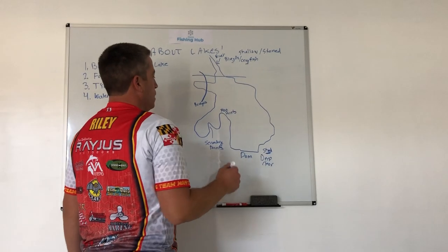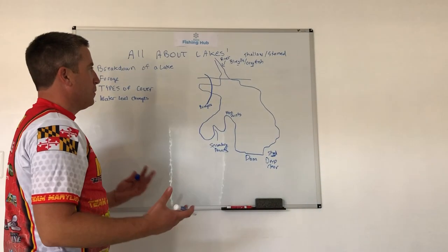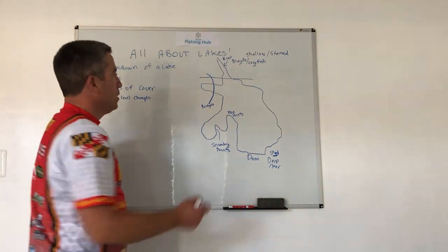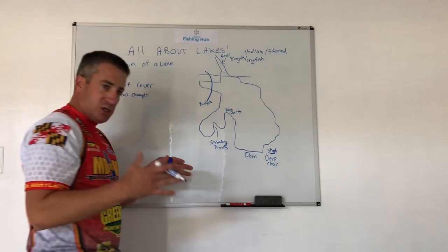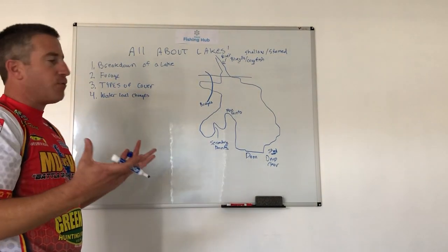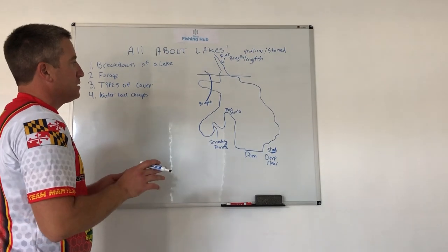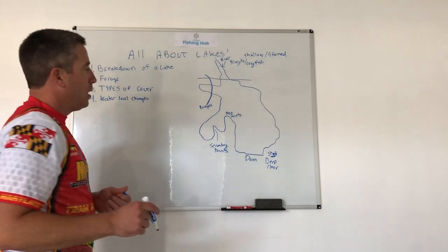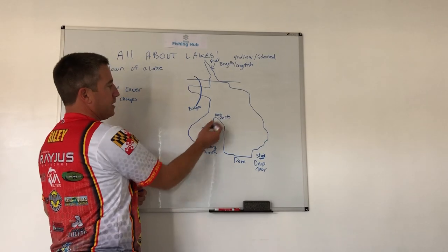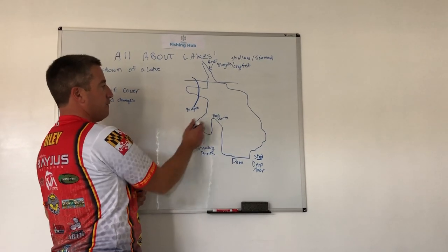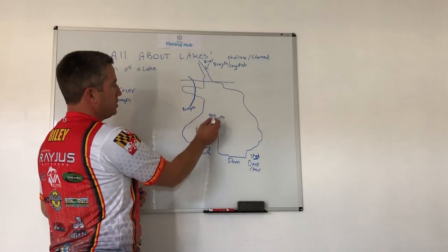Other important lake features include bridges — they're pinch points covered in riprap and very productive areas all year long. There are also secondary points, which are points inside of a creek arm, and then your main points. These are the basic features of a lake to keep in mind.